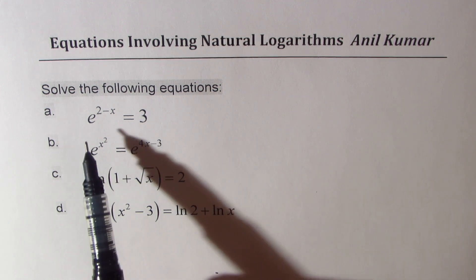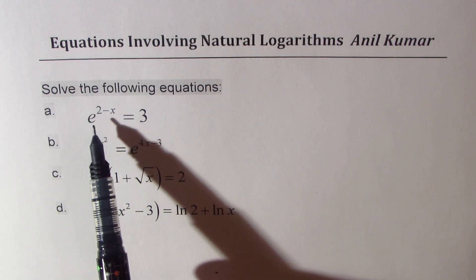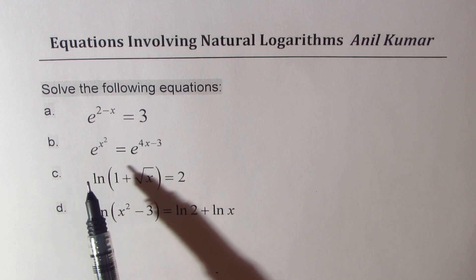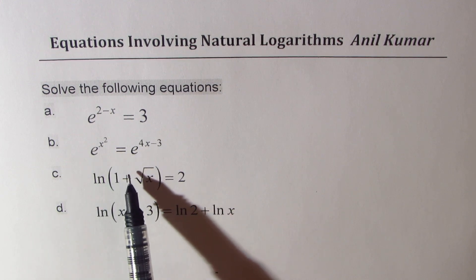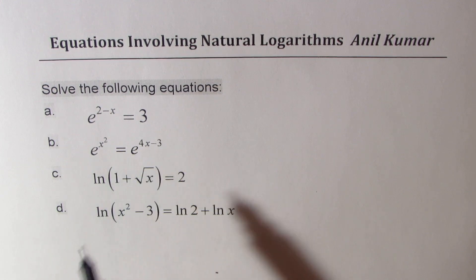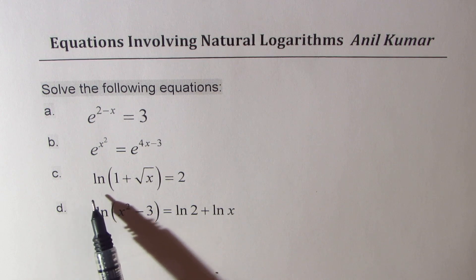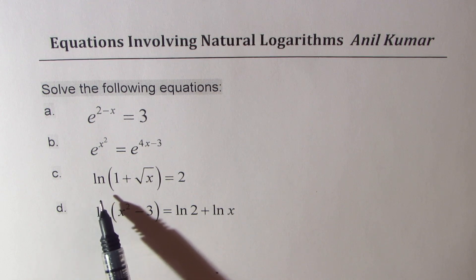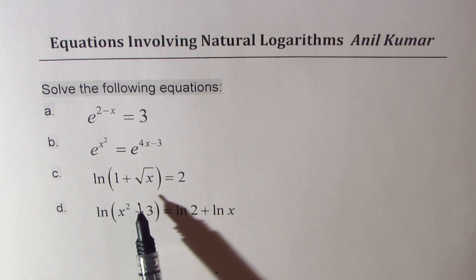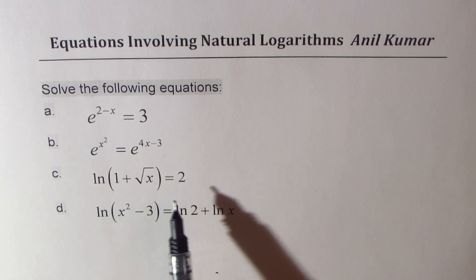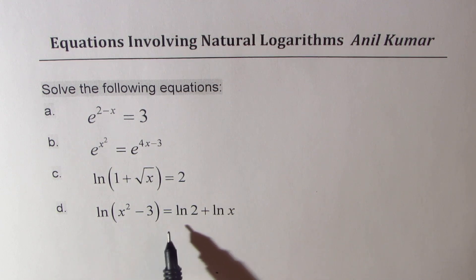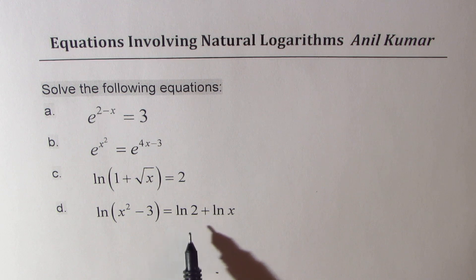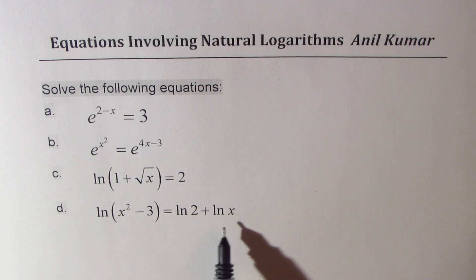Question A: E to the power of 2 minus x equals to 3. Question B: E to the power of x squared equals to E to the power of 4x minus 3. Question C: natural log ln of 1 plus square root x equals to 2. Question D: natural log ln of x squared minus 3 equals to ln 2 plus ln x.